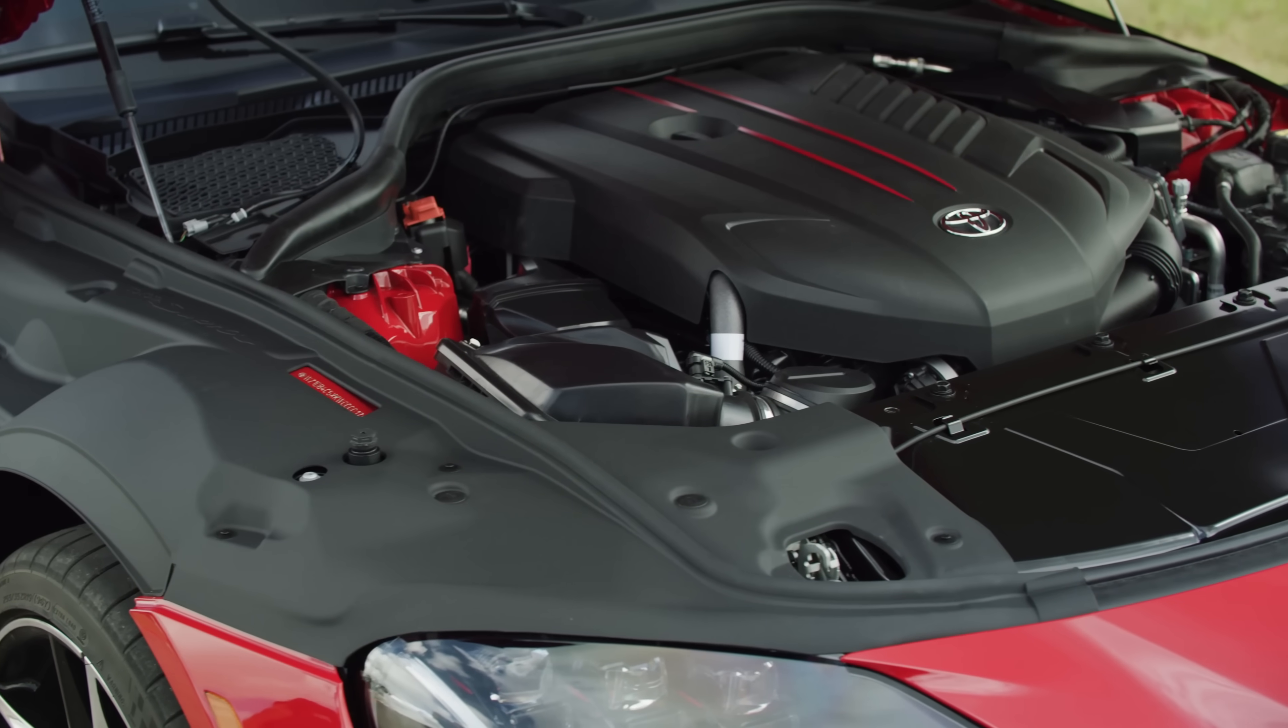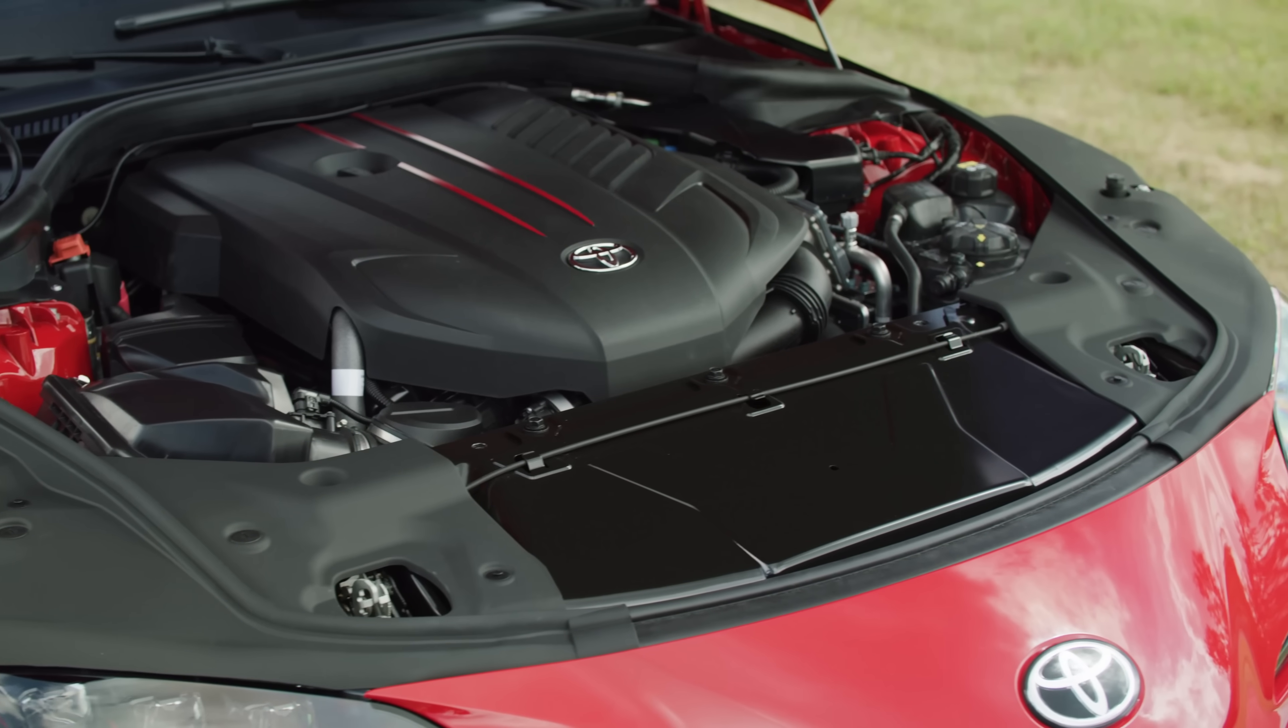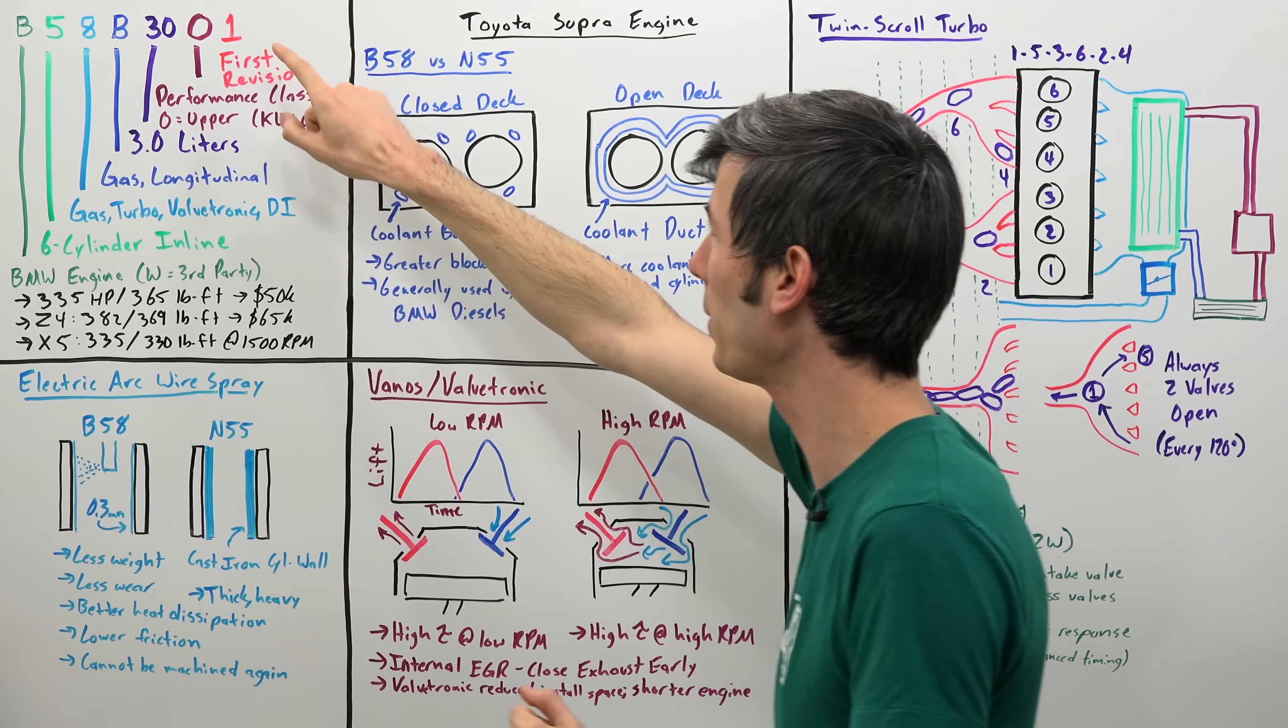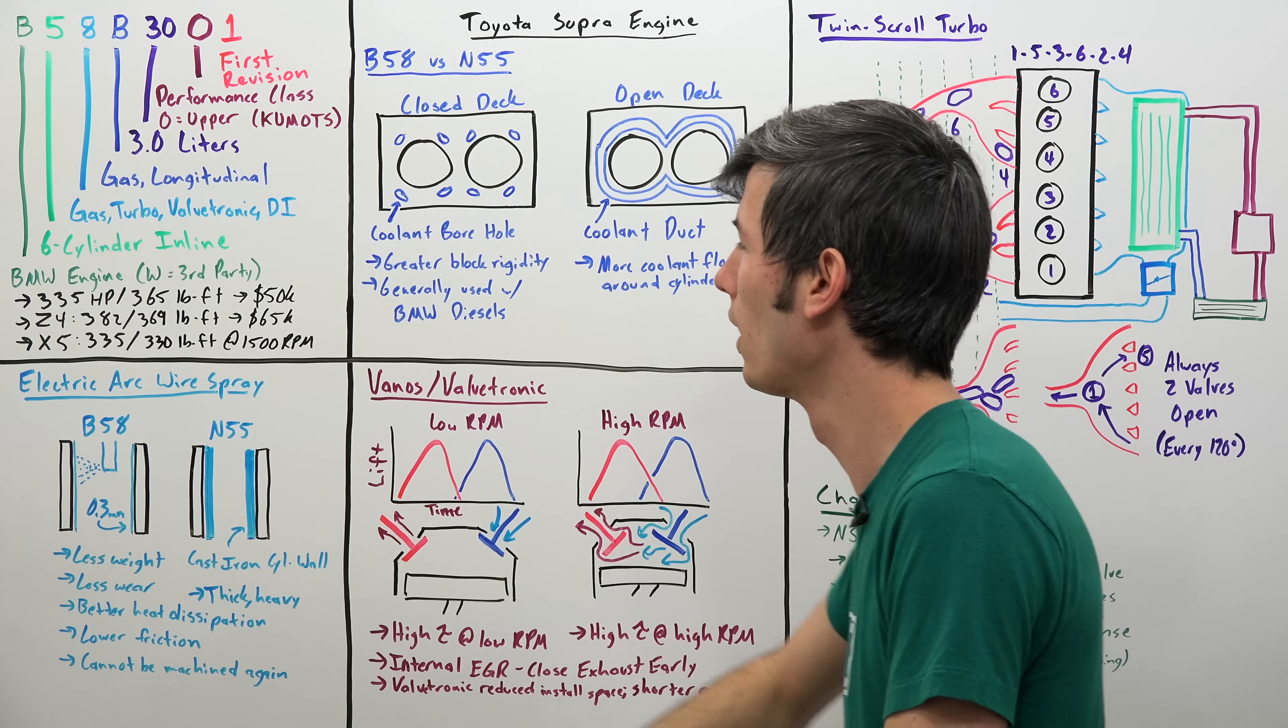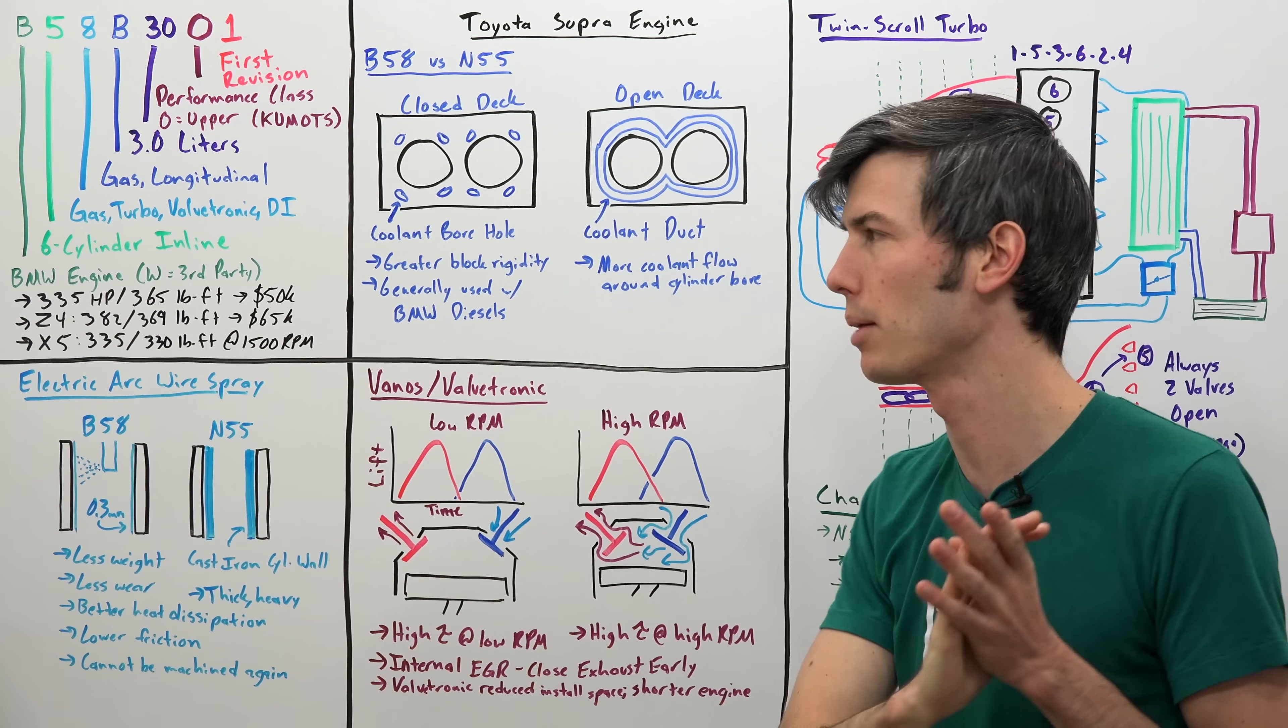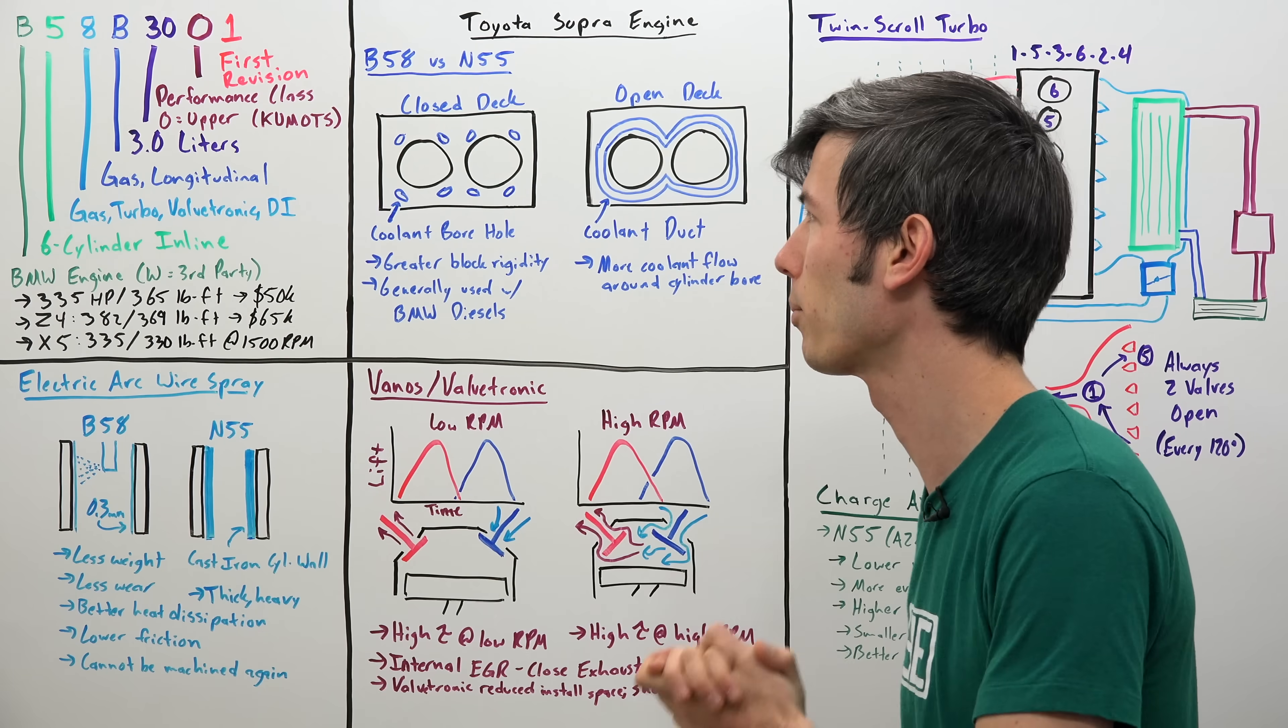Now the engine is referred to as the B58, and there are of course many variations of this B58. So the latest information I've seen is pointing to the engine in the Supra being the B58 B30O1. So what does all of this mean? Well, the B means it was made by BMW, actually made by BMW. If this was a W it would mean that it was created by a third party.